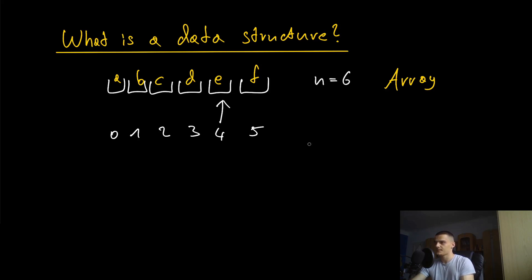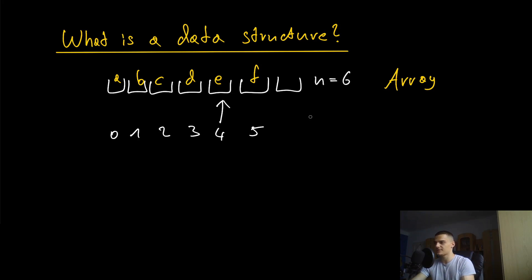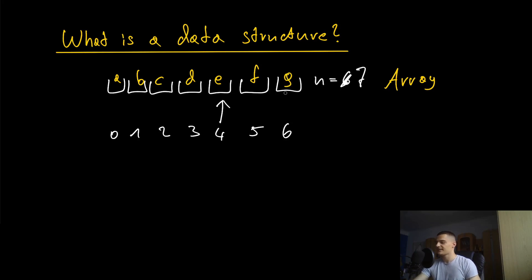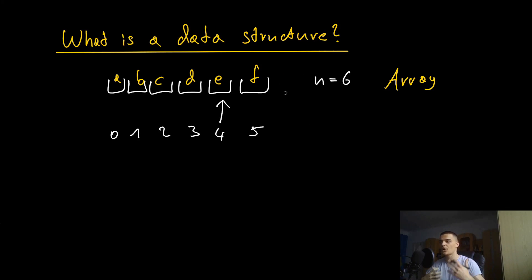A disadvantage is that I'm not able to just append a new element and increase the size of the list. I can't just change n to seven and increase the size of the array. It's not possible with an ordinary array — I cannot just add a new index and enter a g here. This is not possible with an ordinary array.